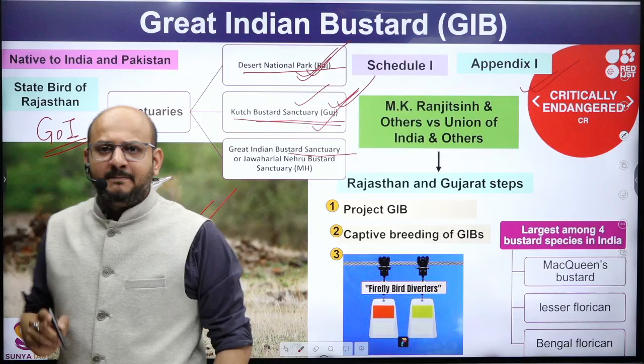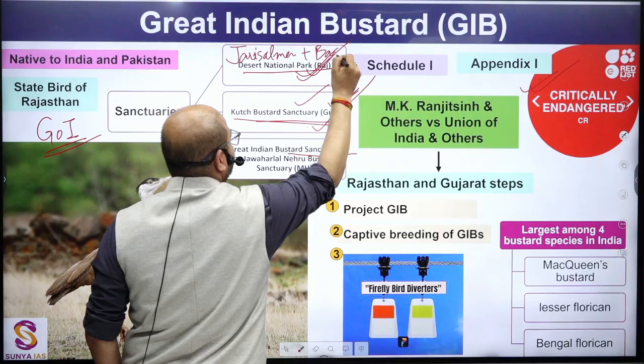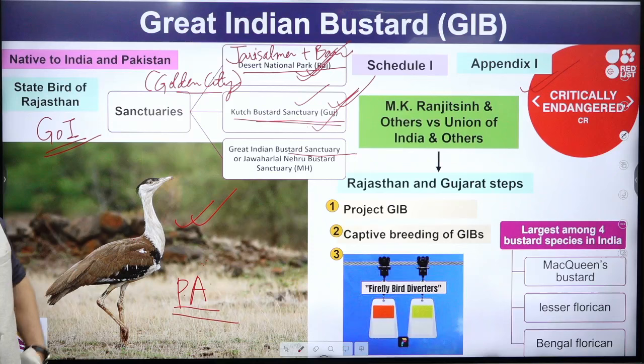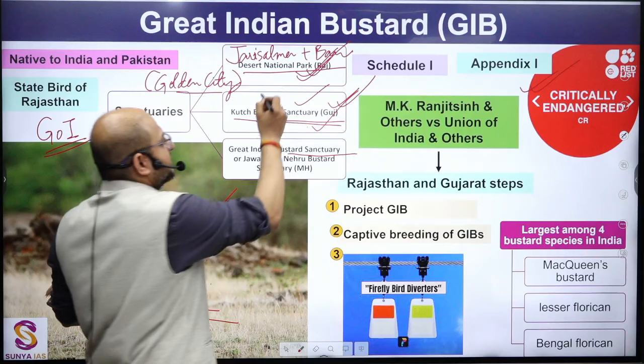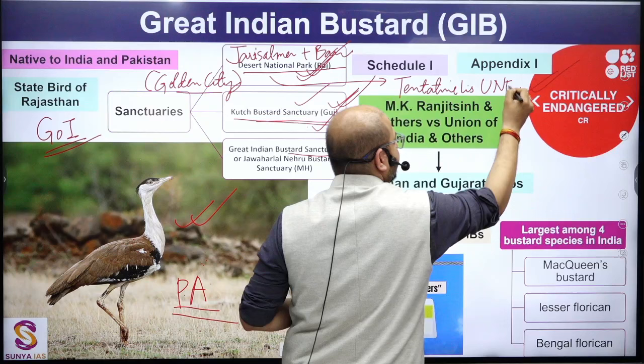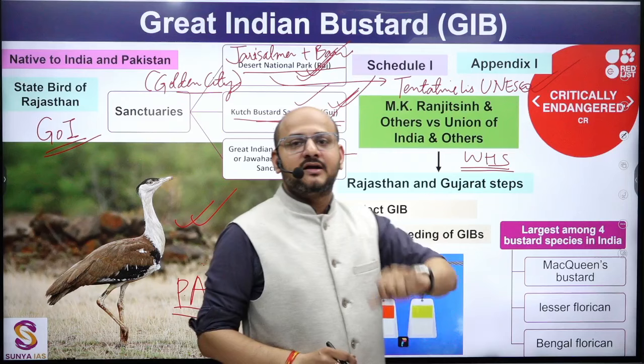The Desert National Park is located near Jaisalmer and Barmer — Jaisalmer also called the golden city. This Desert National Park is listed in the tentative list of UNESCO World Heritage Sites, and it also encompasses the Thar Desert.